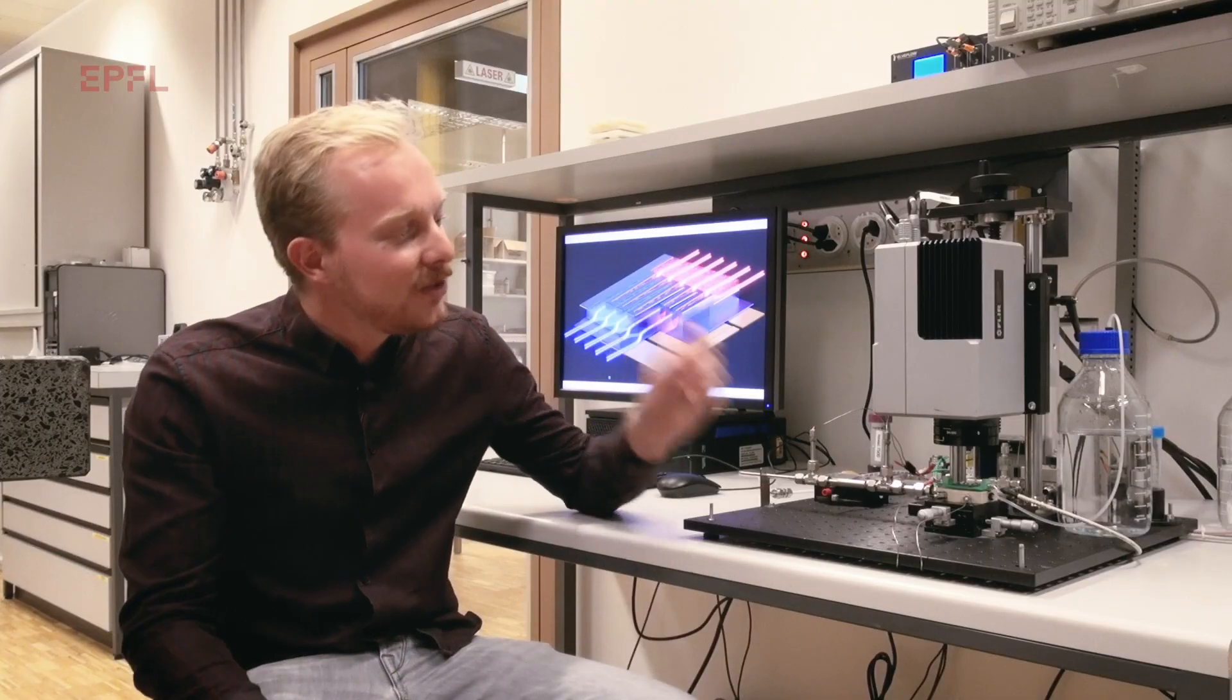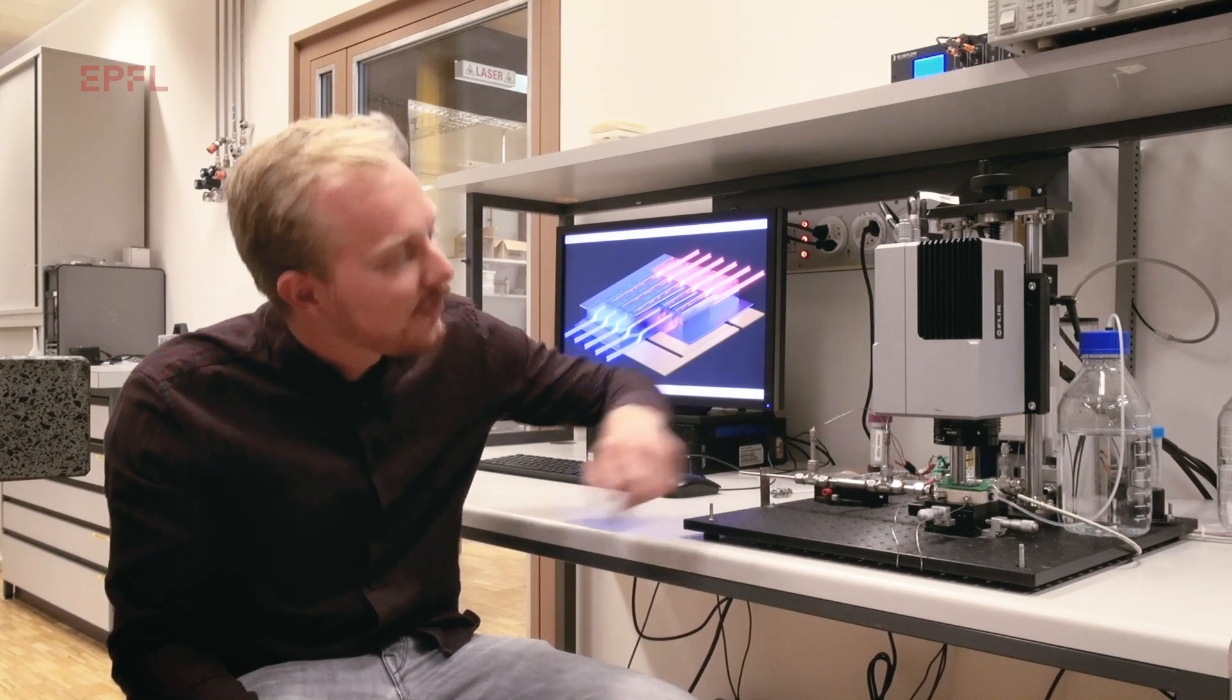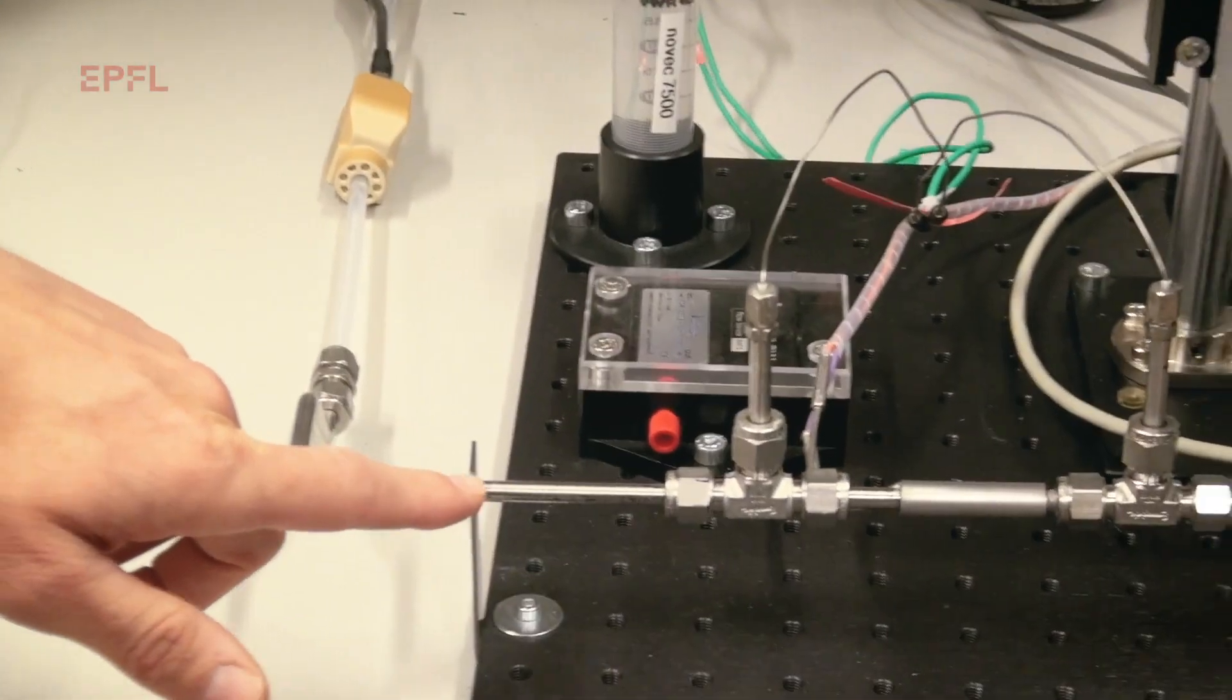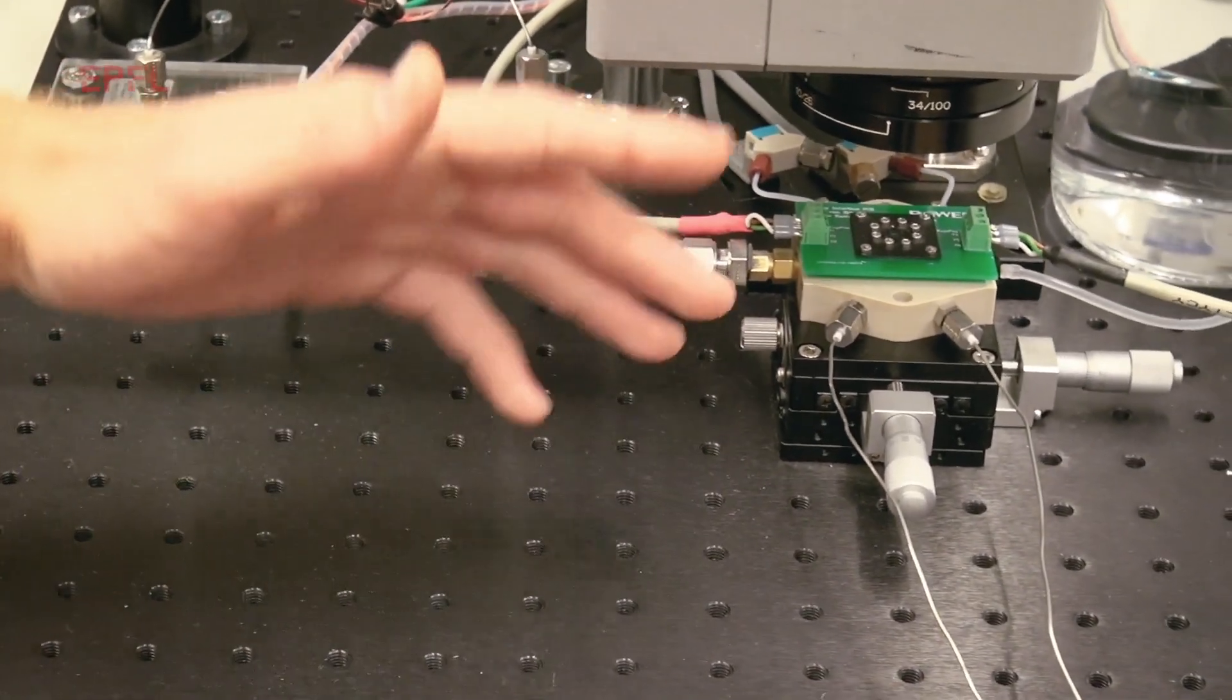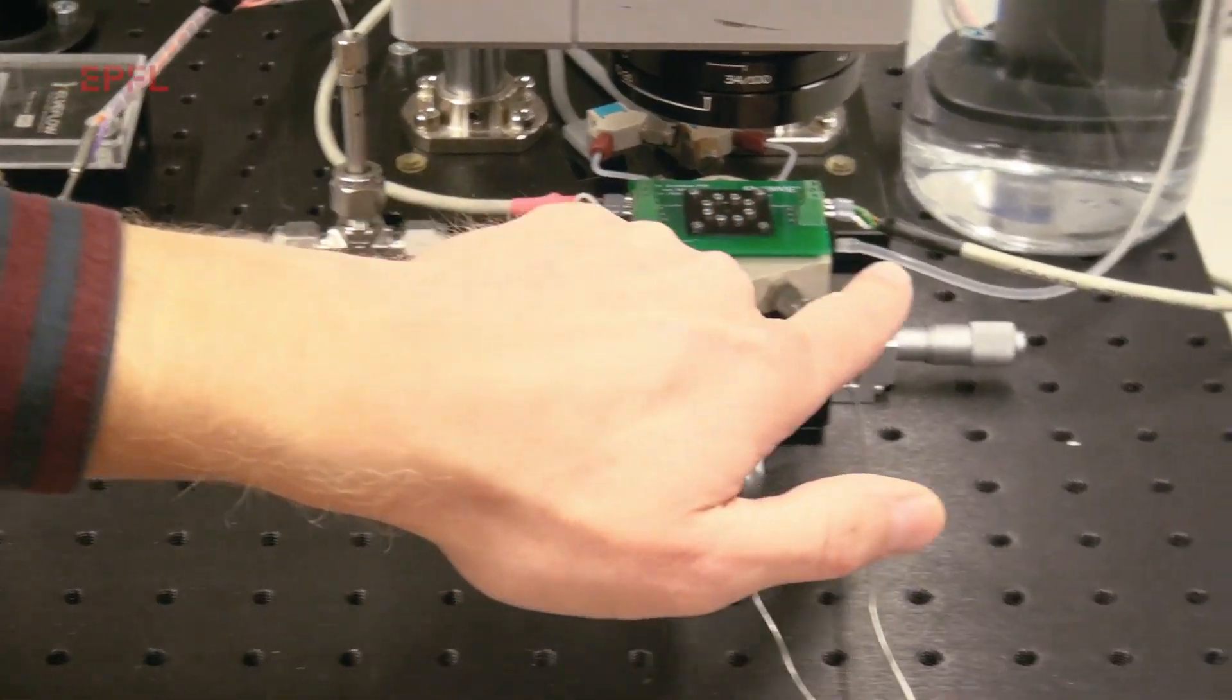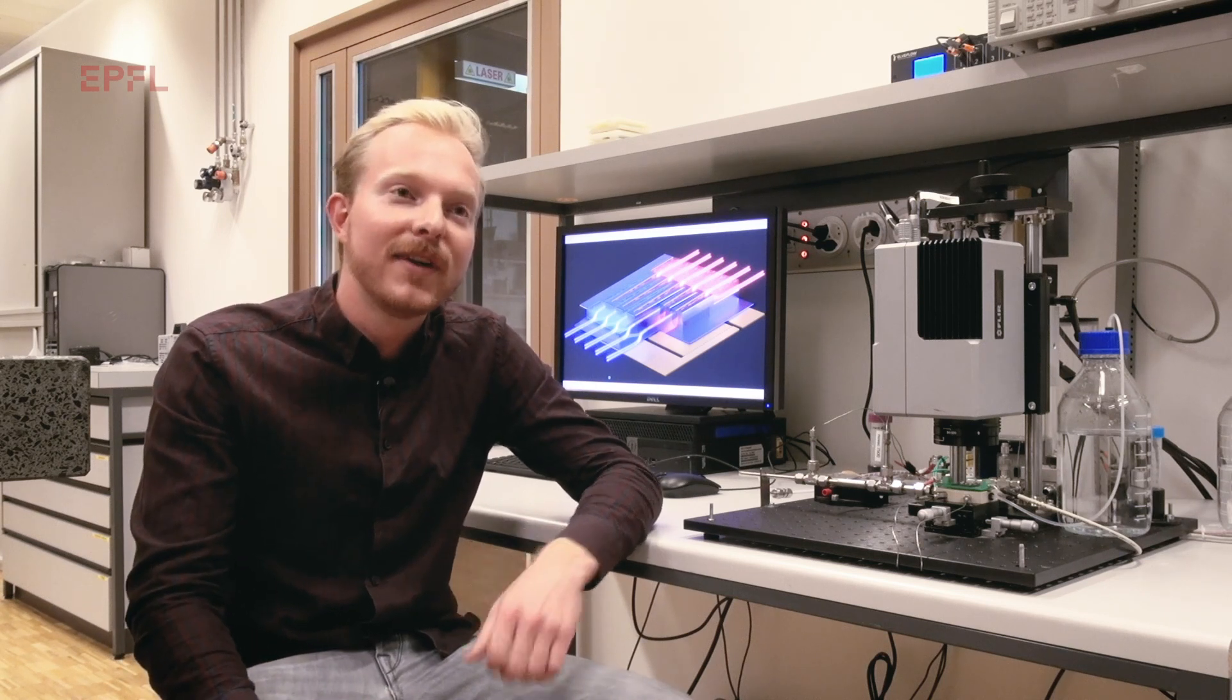Inside this setup, we can put a single chip that we fabricated inside the cleanroom and put it here inside this testing section. We connect it to a flow of liquid. Liquid flows through these tubes until it enters the chip where it cools down the device. And in the meantime, there's an infrared camera that is being used to measure the temperature at the surface of the chip, so we can see how well it is actually cooling down the device.